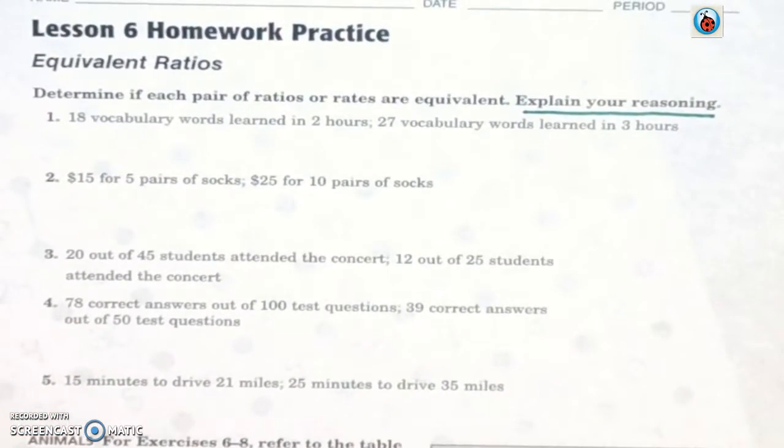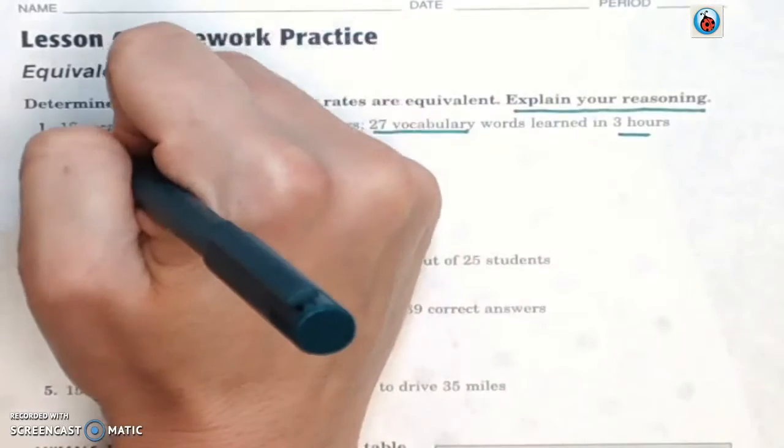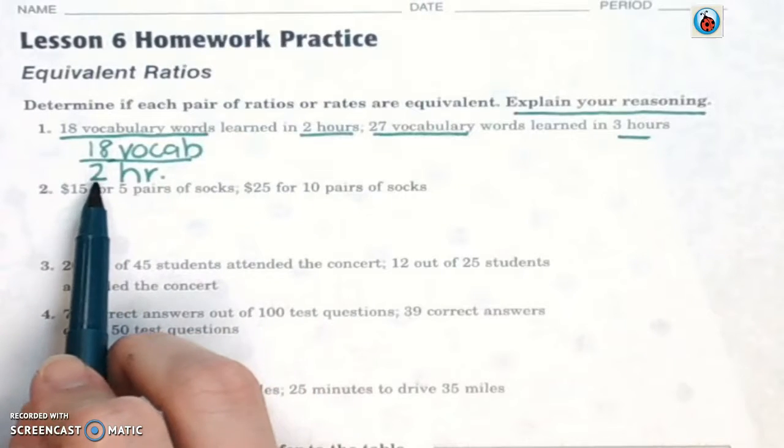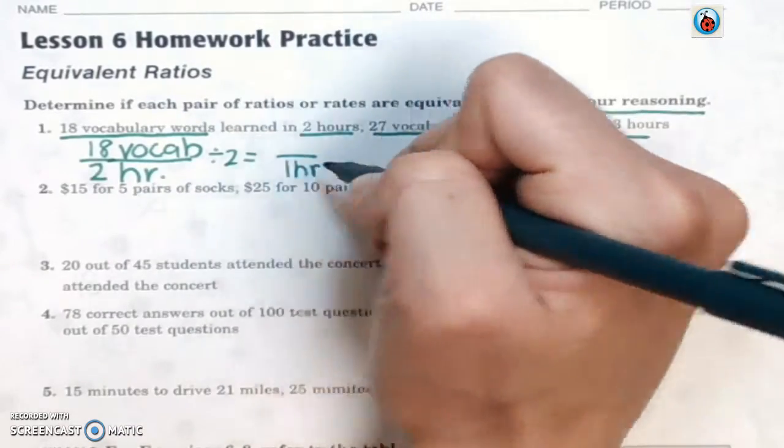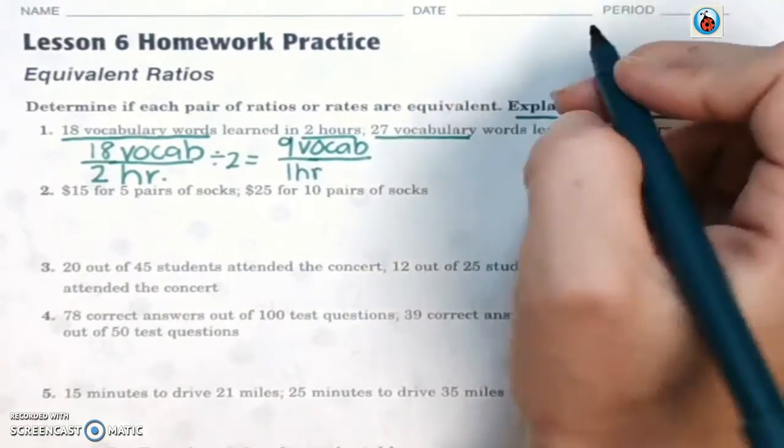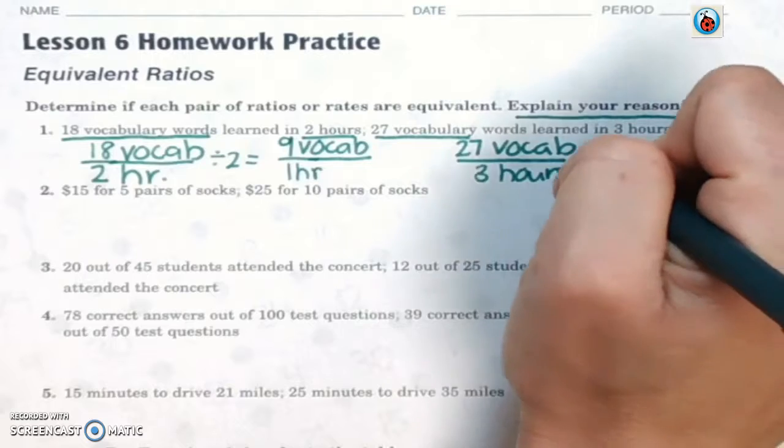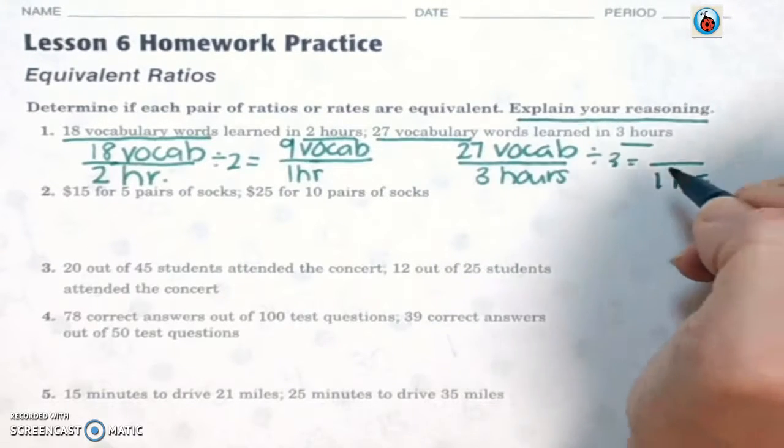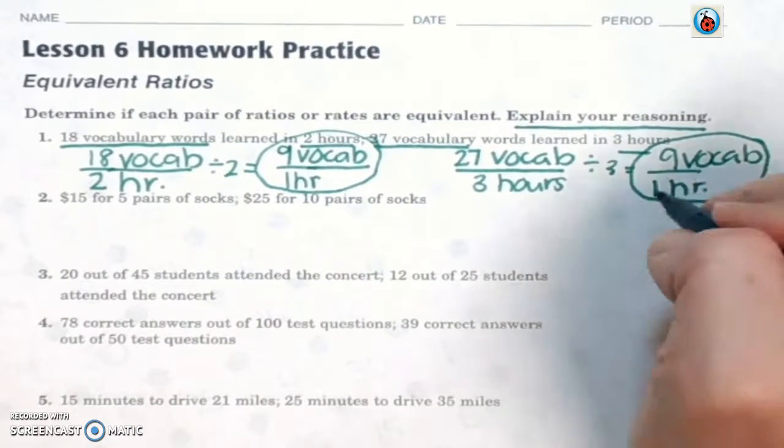I'm going to do the first one with you. It says 18 vocab words in 2 hours and then 27 vocab words in 3 hours. So I'm going to set up 18 over 2. Because I know that 2 can go into 18 really easily, I'm going to divide by the bottom number. 18 divided by 2 is 9 vocab. And now let's set up the other one. We have 27 vocab over 3 hours. 27 divided by 3 is 9. Since we have 9 vocab for 1 hour and 9 vocab for 1 hour, they're the same. So this one is equivalent.